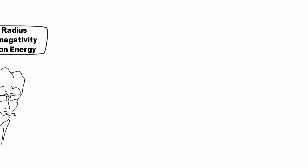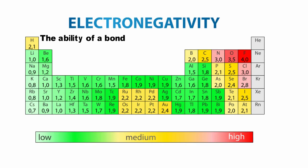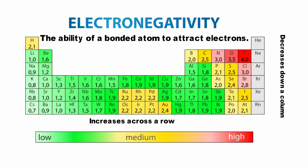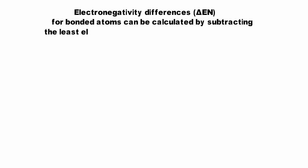Electronegativity is the ability of a bonded atom to attract electrons. On the periodic table, electronegativity decreases moving down a column and electronegativity increases moving across a row. Electronegativity differences for bonded atoms can be calculated by subtracting the least electronegative atom from the atom with the highest electronegativity. The electronegativity of an atom can be found on some periodic tables in chemistry textbooks or in chemical constant databases.